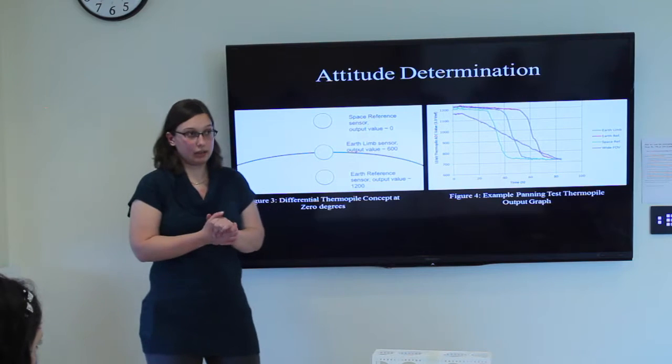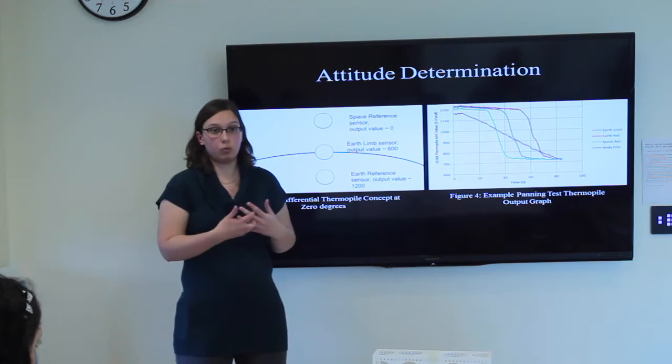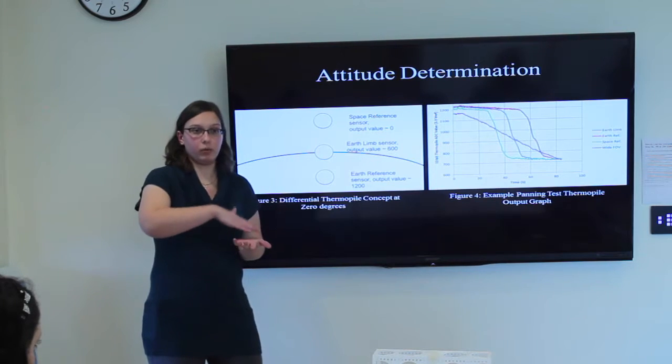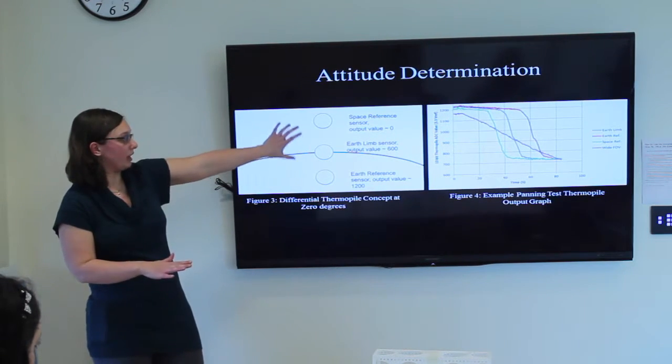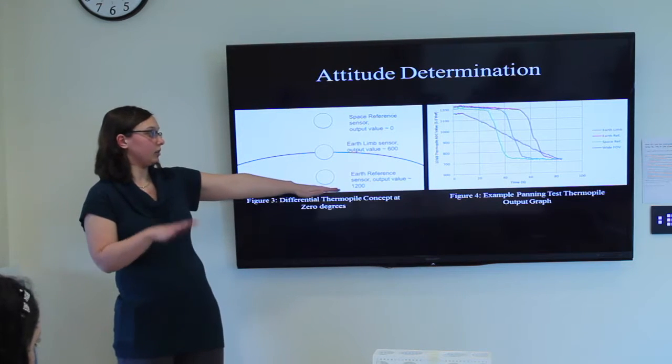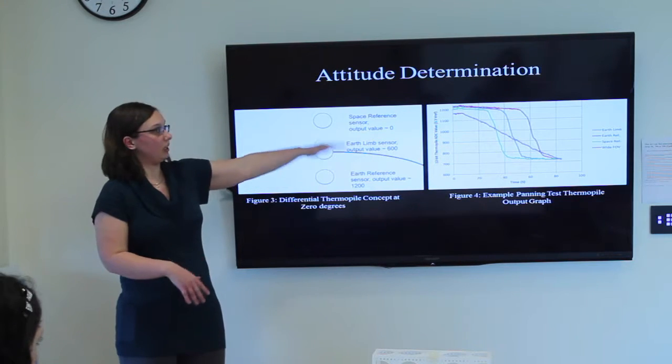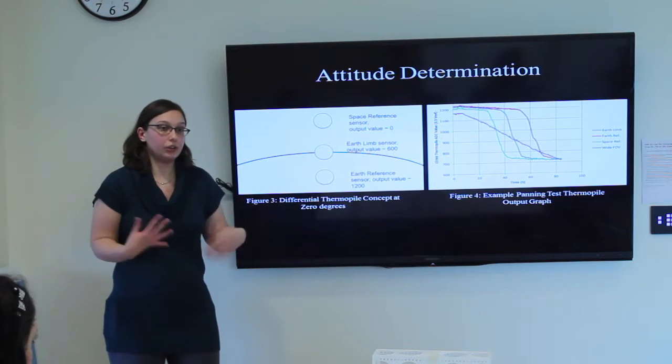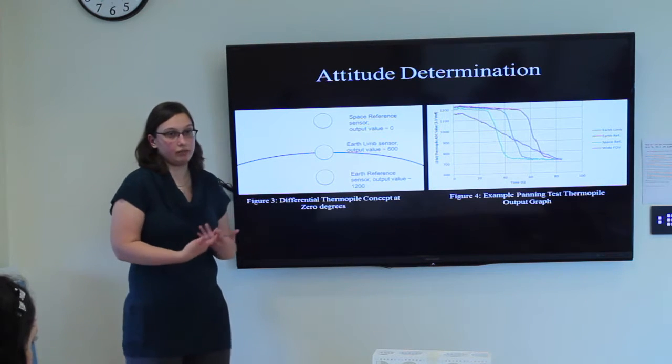If we had multiple thermopiles with the Earth partially within their field of view, we could determine where the Earth is by where the highest reading is, as shown in this image right here. The Earth's sensory output value is about 1200, horizon about 600, and the space reference close to zero. We could compare and contrast that to create one of two vectors we could use for our attitude estimate.